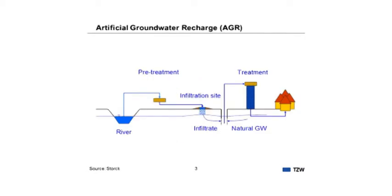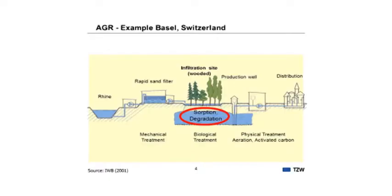Here is an example of an artificial groundwater recharge site. This is Basel in Switzerland, where the water of the river Rhine is used. It undergoes pretreatment in rapid sand filtration, and afterwards it is infiltrated in wooded infiltration sites. This is where the main removal of organic trace pollutants and DOC takes place. Finally, there are production wells and some treatment for physical stabilization and disinfection. This is an impression of such a wooded infiltration site in Basel.